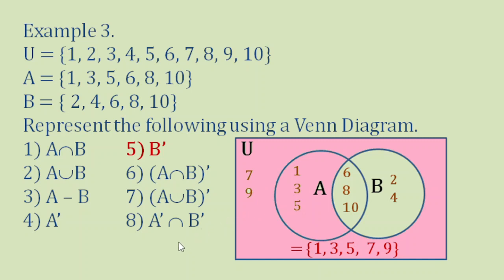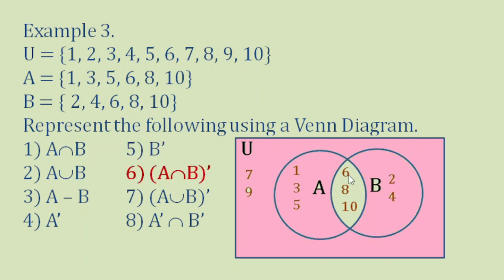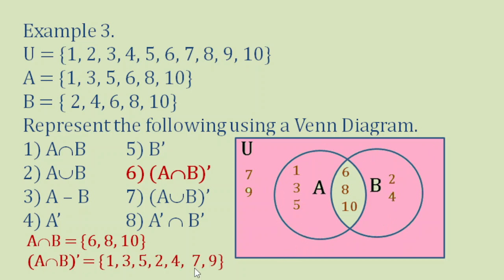Number 6: A intersection B prime. A intersection B is the overlap region, but A intersection B prime means not that part — it's the other part of A. So the elements are 1, 3, 5, 2, 4, 7, 9.